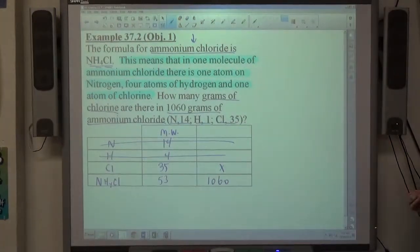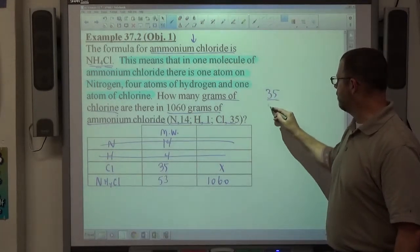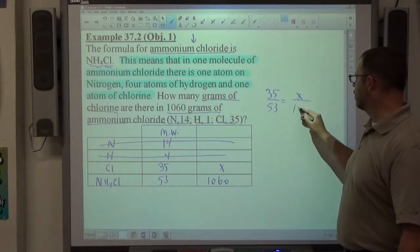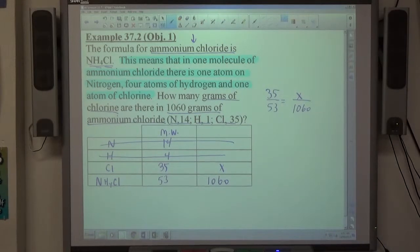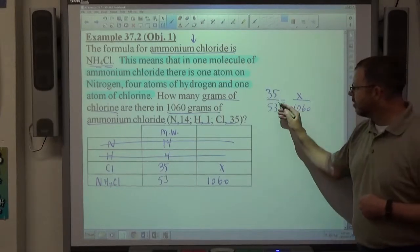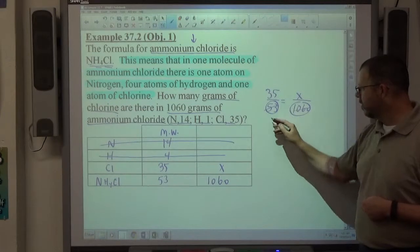And then once we get our numbers in the chart, as we should, we get the ratio of 35 over 53 is equal to the ratio of X over 1,060. And again, looking to reduce if possible. Just so happens 53 and 1,060 reduce to 20.